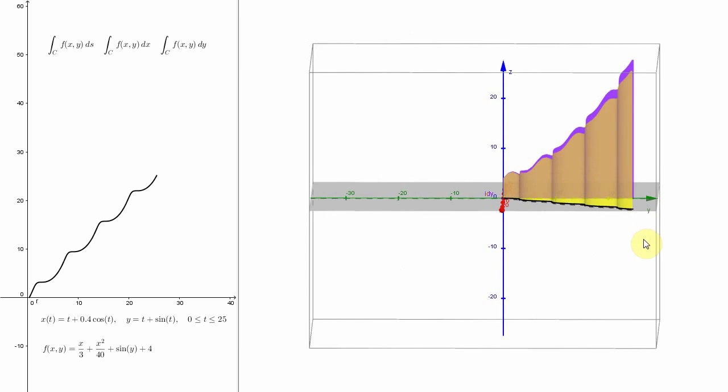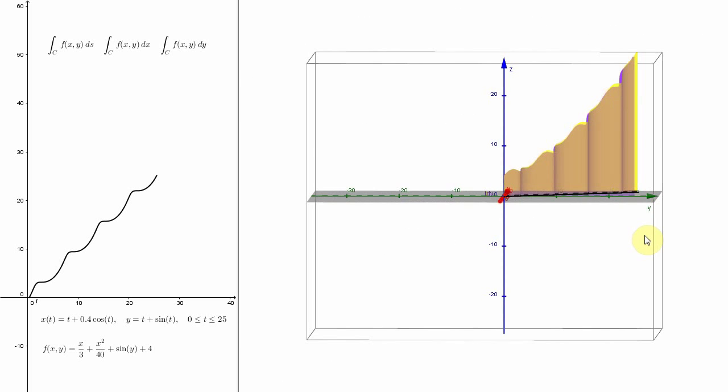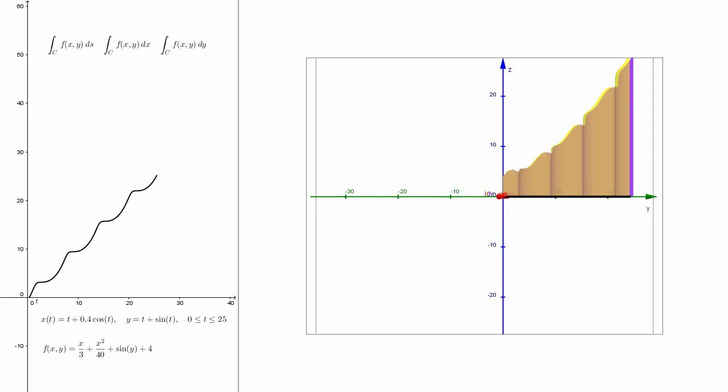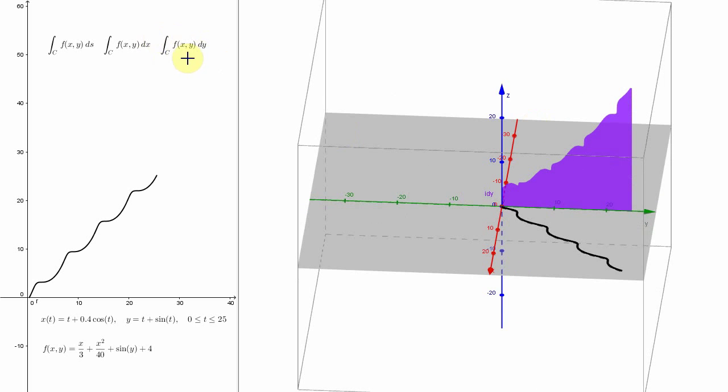so you can kind of see that projection from here, at least I'll try. Okay, perspective kind of worked. Maybe I'll hide actually the yellow surface now. That's the integral right here, integral of f over c with respect to y.